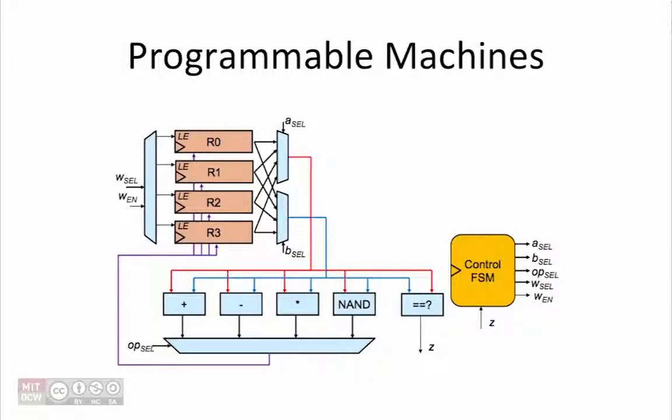There are multiple control signals in this datapath. The first two are Asel and Bsel. These are used to select which register drives the corresponding multiplexer output. The value stored in the register selected by Asel becomes the A input to the arithmetic operations and is passed to the arithmetic units along the red wire. The value stored in the register selected by Bsel becomes the B input to the arithmetic operations and is passed to the arithmetic units along the blue wire.